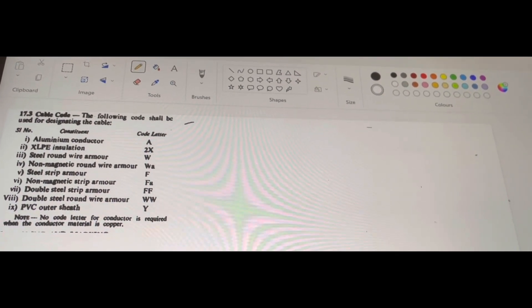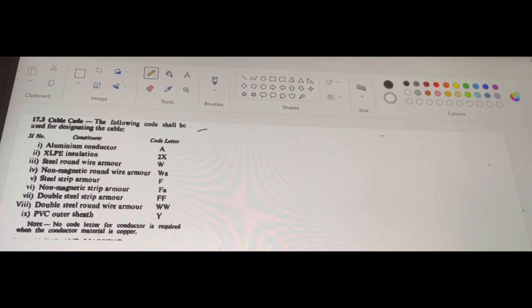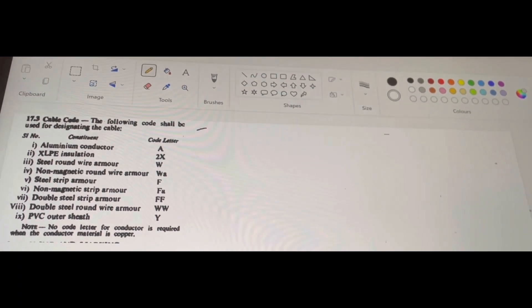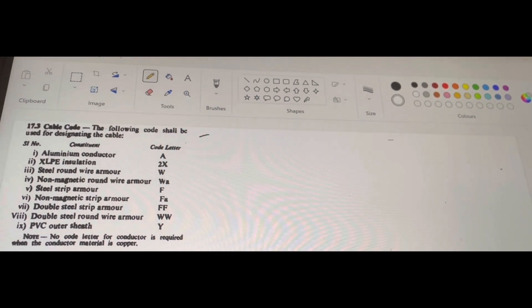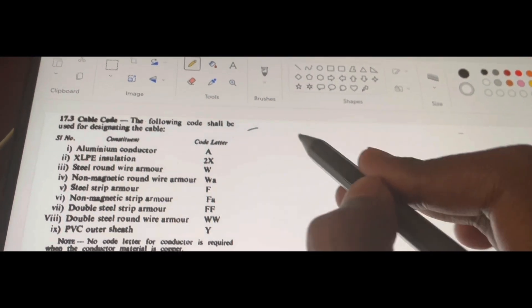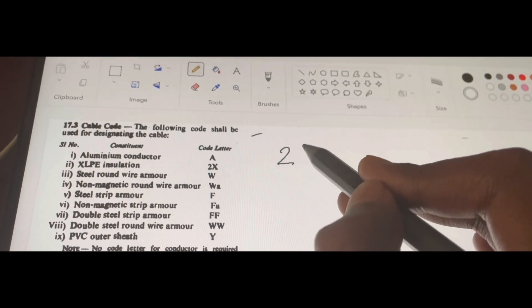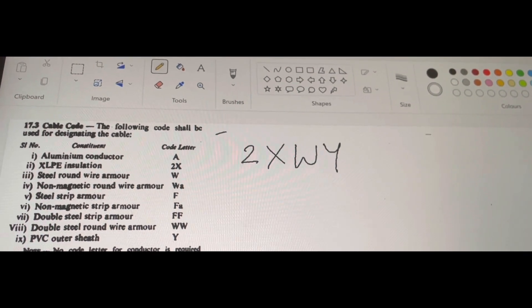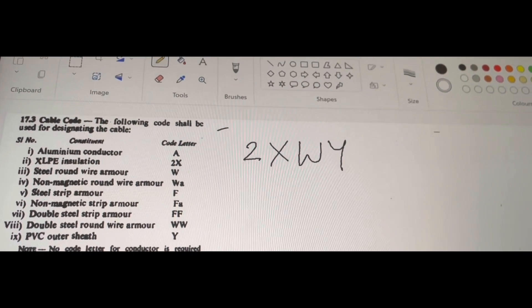Assume that you have taken a cable. You have taken a cable and there is one code written on that cable. There is a code printed on that particular cable. Assume that code is 2xwy. The code is 2xwy. Now, how to interpret this code? What is the meaning of this code?